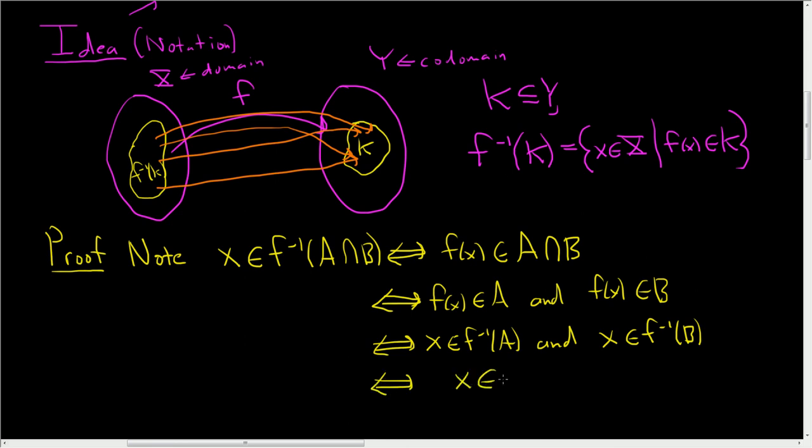So X is in the intersection of the inverse image of A with the inverse image of B.